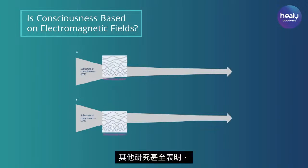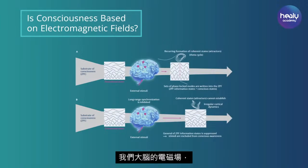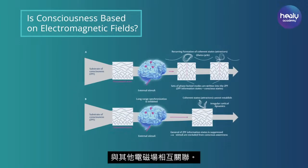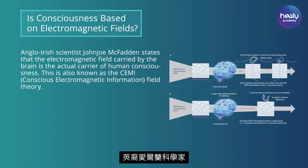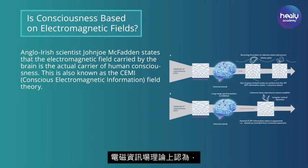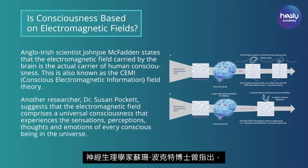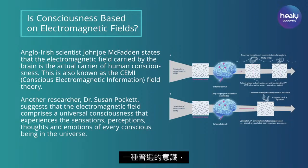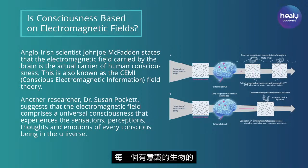Other studies even suggest that the electromagnetic field of our brain and thus our consciousness is connected to other electromagnetic fields. Anglo-Irish scientist John Joe McFadden states in his Conscious Electromagnetic Information Field Theory that the electromagnetic field carried by the brain is the actual carrier of human consciousness. Neurophysiologist Dr. Susan Pocket has stated that the electromagnetic field comprises a universal consciousness that experiences the sensations, perceptions, thoughts, and emotions of every conscious being in the universe.